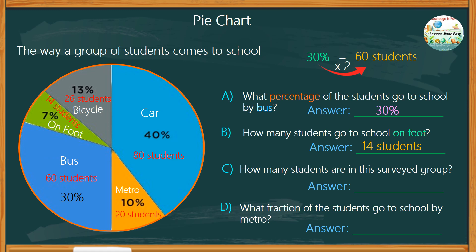So how many students are in this surveyed group? Let's add 14 plus 26 plus 80 plus 20 and 60. We get a total of 200 students.